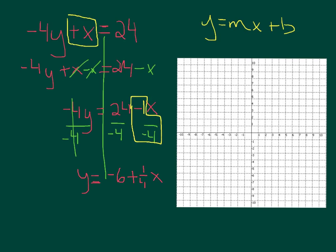Now we just have to rewrite this equation in the correct order. The slope is positive 1/4 x and the y-intercept is -6. So y = 1/4 x - 6. There's my new equation written in the correct form that I can now graph.